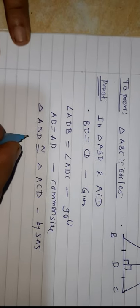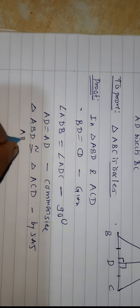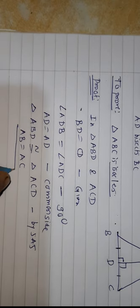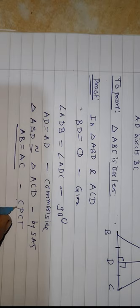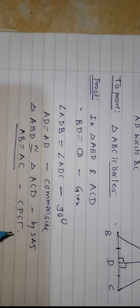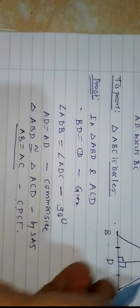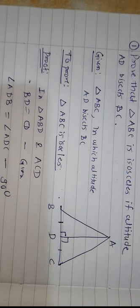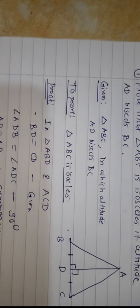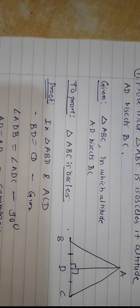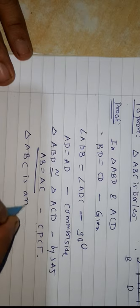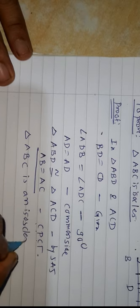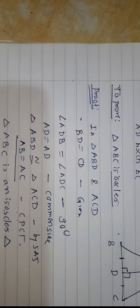So now we can say finally AB is equal to AC. Why? By CPCT — corresponding parts of congruent triangles. So AB and AC are equal, which means triangle ABC is an isosceles triangle. This is the first solution. Now see the second solution.